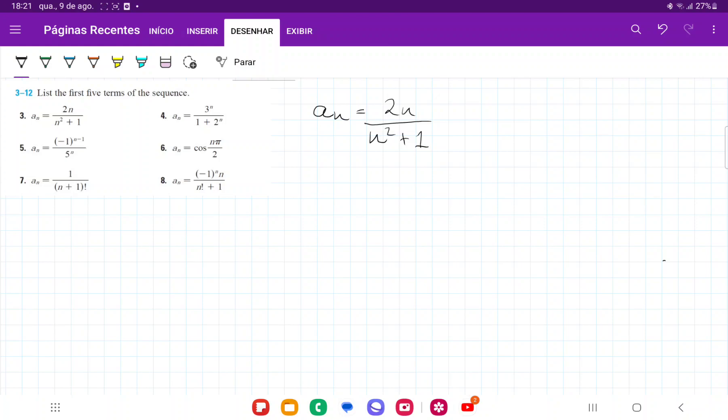Because all sequences, we plug in natural numbers into that expression. So for a1, we're going to have 2 times 1 over 1 squared plus 1, and so that is going to give us 2 over 2, which is equal to 1.